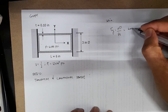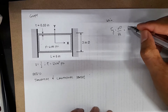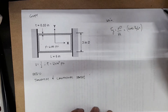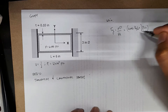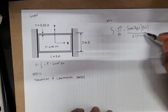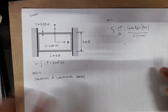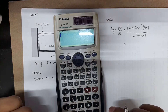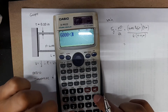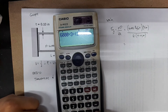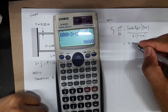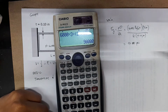We have P equals 6,000 pounds per square inch, diameter equals 3 inches, and 2 times thickness equals 2 times 0.1 inch. So, 6,000 times 3 divided by 2 times 0.1 gives us 90,000 psi. This is the tangential stress, stress y.